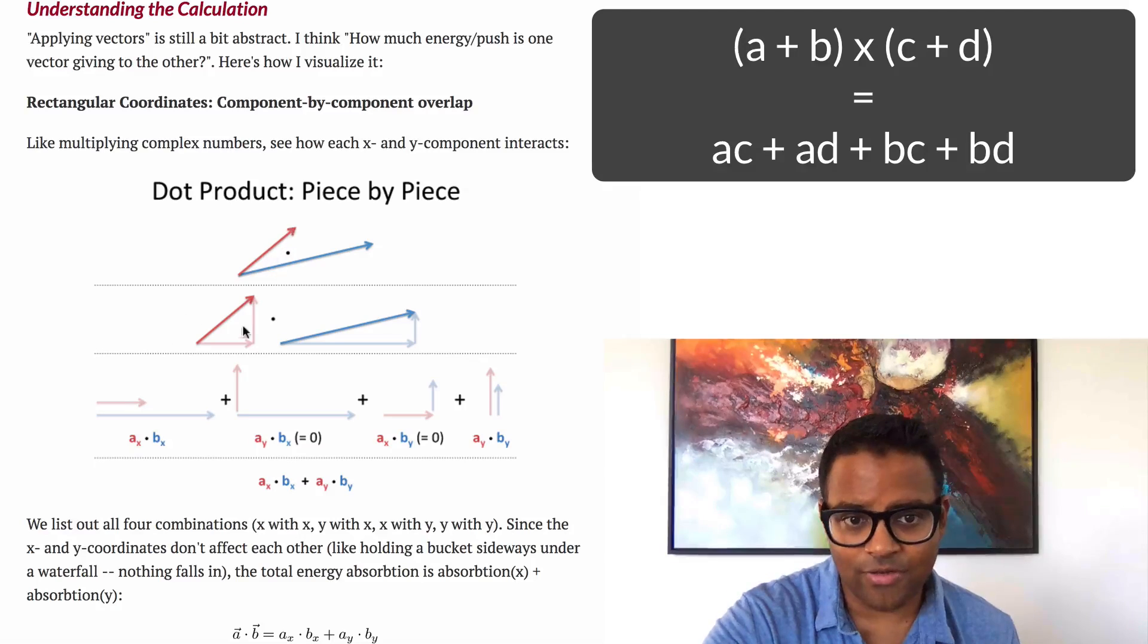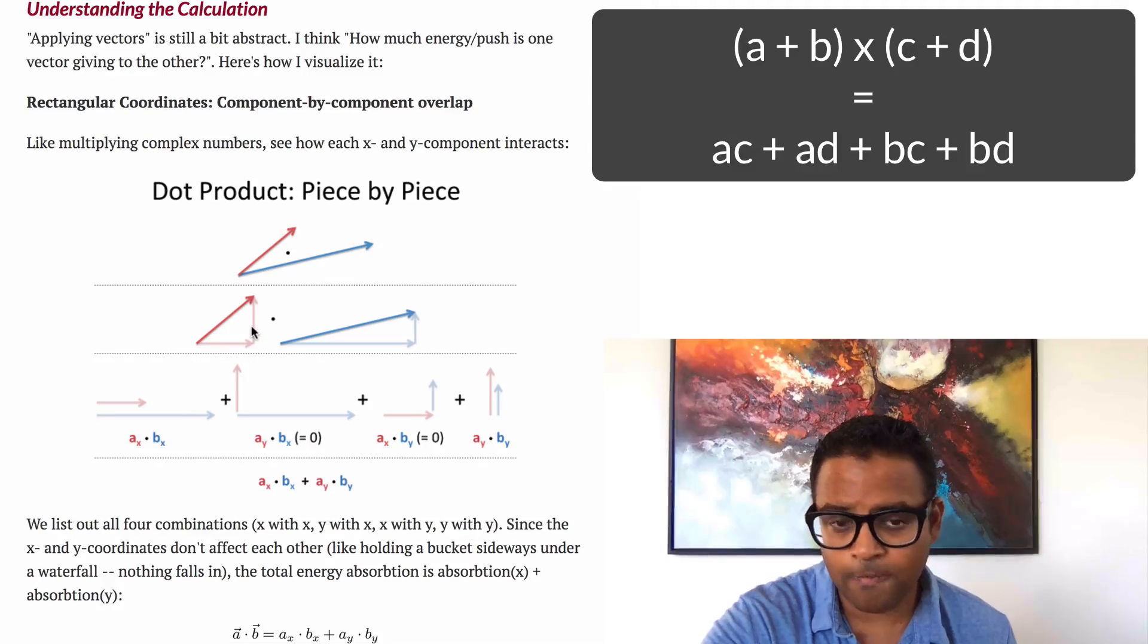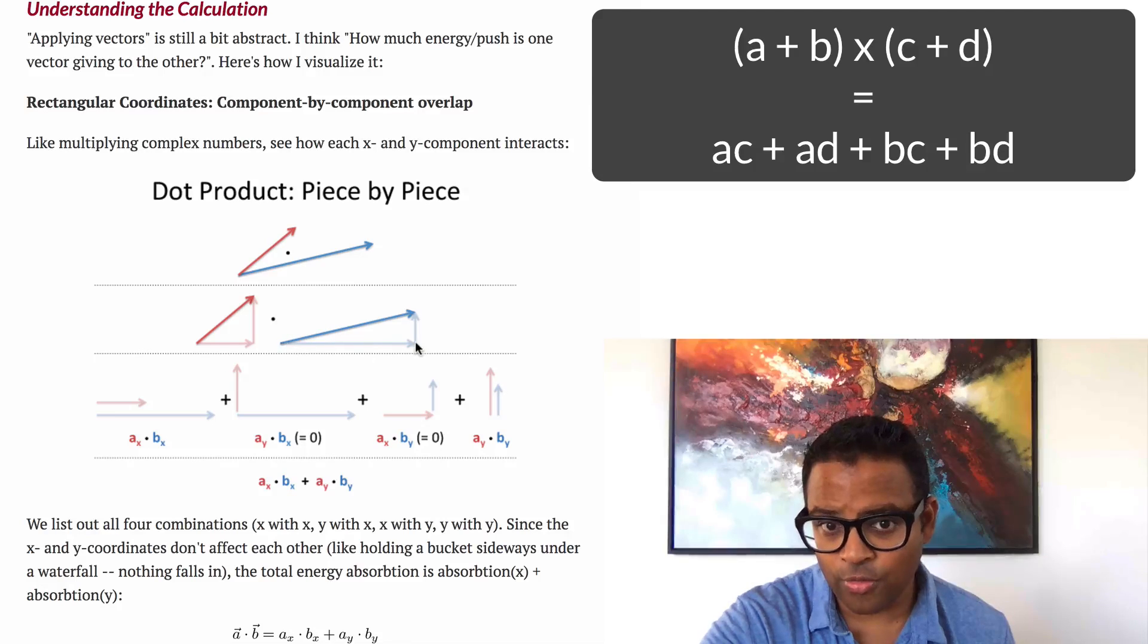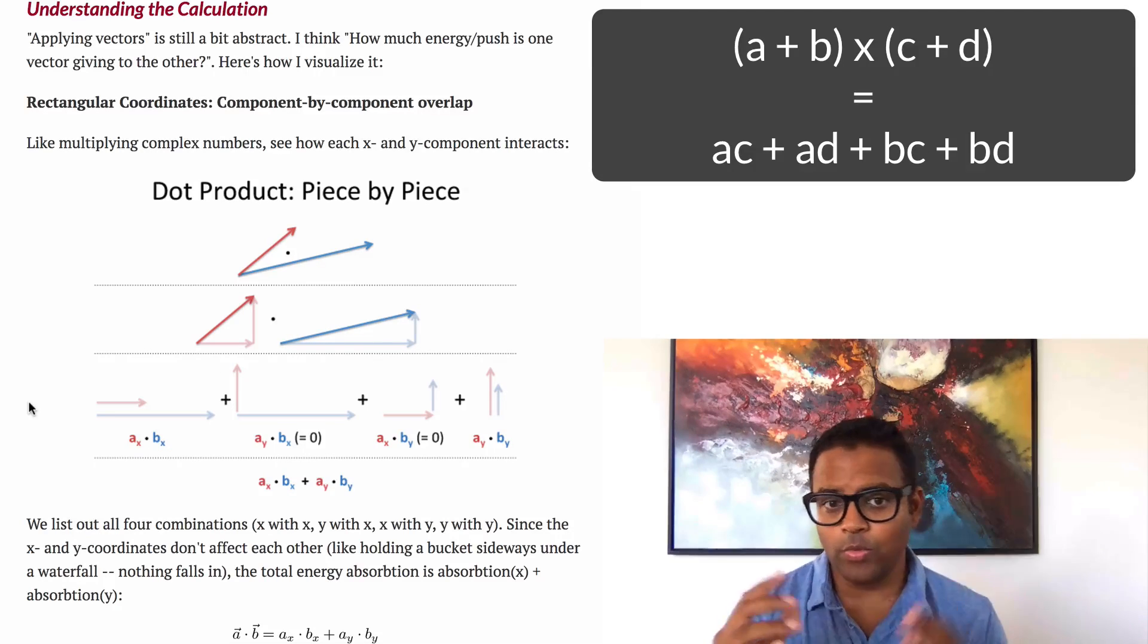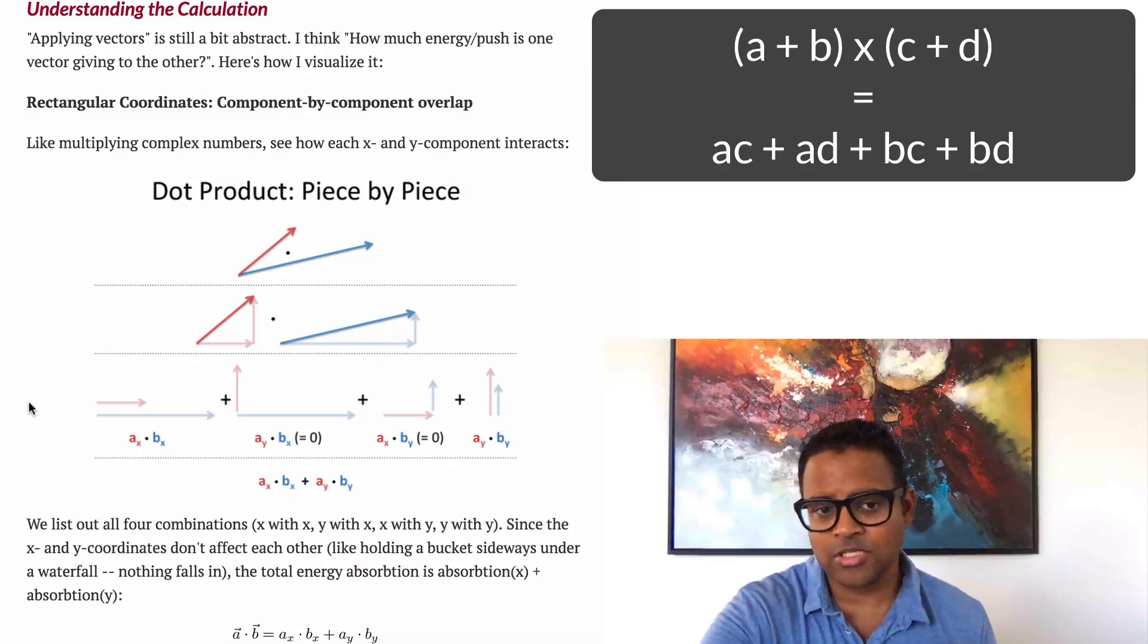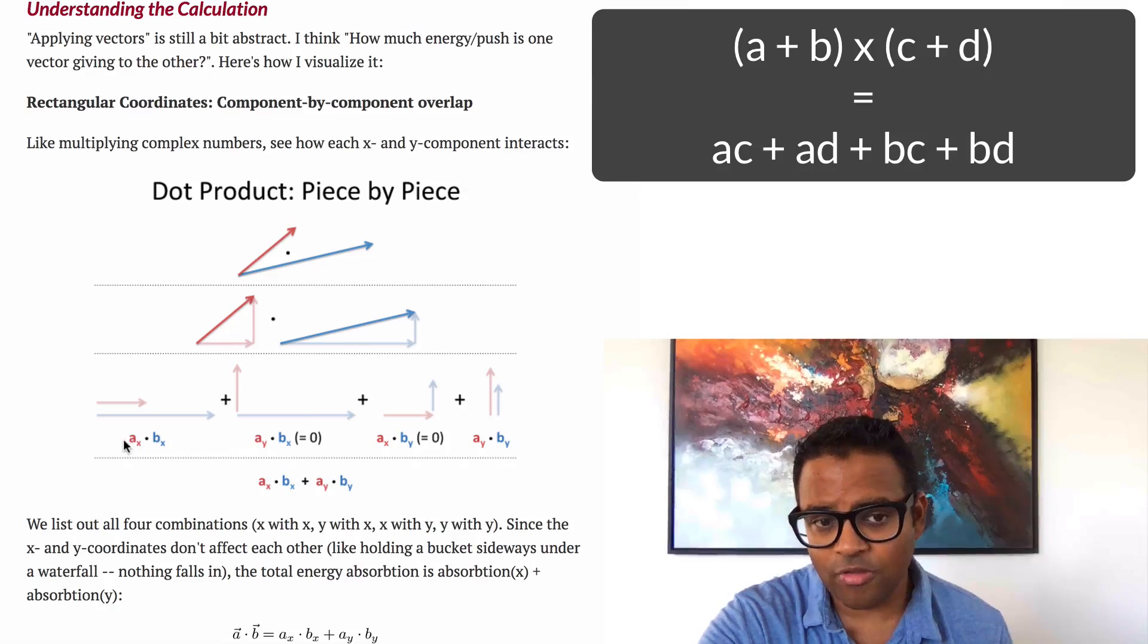So the red vector is actually made up of two smaller pieces, right? It has a horizontal and vertical part. The blue vector also has a horizontal and vertical part. When we dot product them, we're kind of doing a multiplication between every single piece. So x with x, y with x, x with y, and y with y.